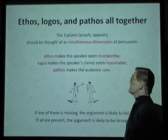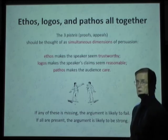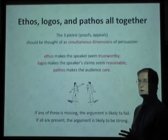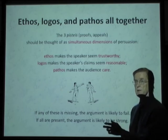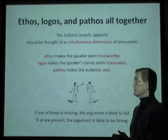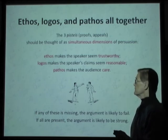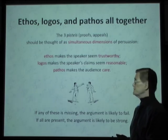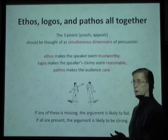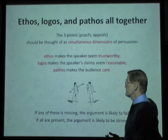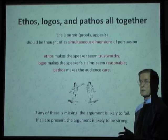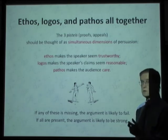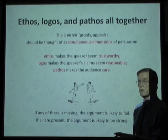We should note that ethos, logos, and pathos all work together. The three proofs should be thought of as simultaneous dimensions of persuasion that are always present — although one may be more predominant at a given point, they all must be present. Ethos makes the speaker seem trustworthy; logos makes the speaker's claims seem reasonable; and pathos makes the audience care. If any of these is missing, the argument is likely to fail. If all are present, the argument will be stronger. We should think of ethos, logos, and pathos as simultaneous dimensions of persuasion that all work together.